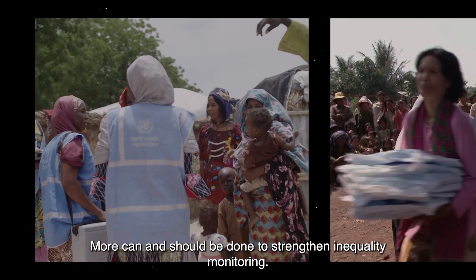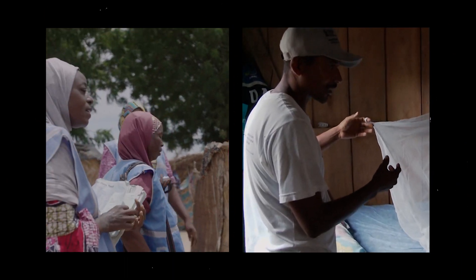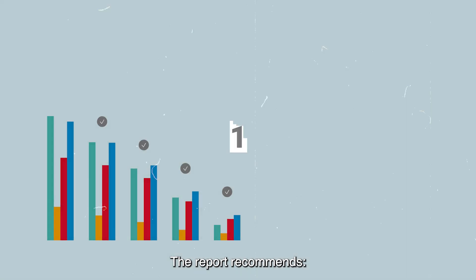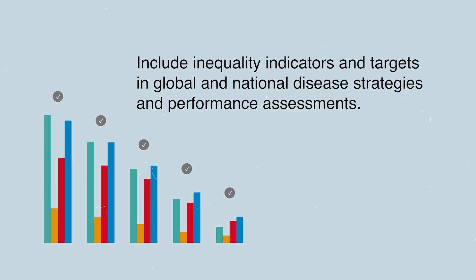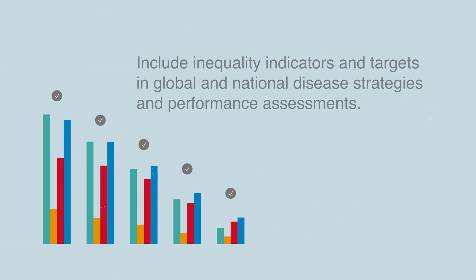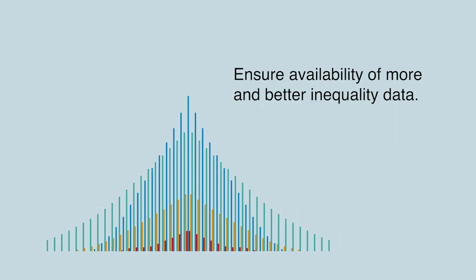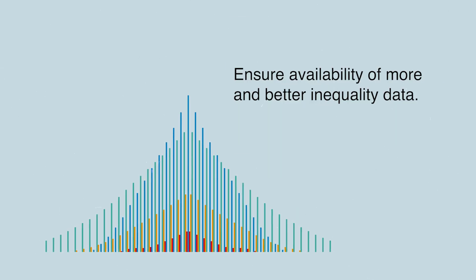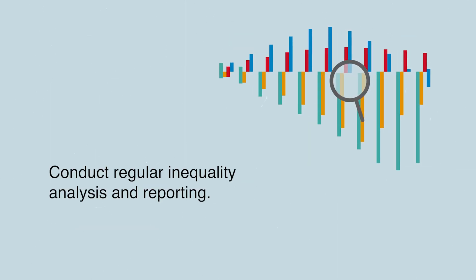More can and should be done to strengthen inequality monitoring. The report recommends: one, include inequality indicators and targets in global and national disease strategies and performance assessments; two, ensure availability of more and better inequality data; three, conduct regular inequality analysis and reporting.